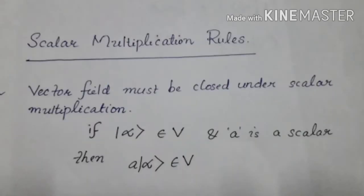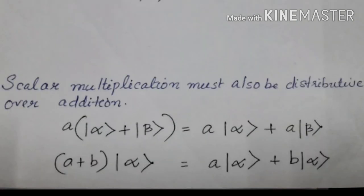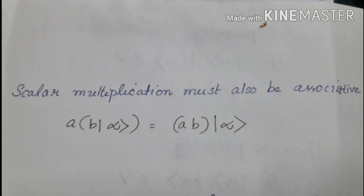Scalar multiplication rules: the vector field must be closed under scalar multiplication — that is, if ket vector alpha belongs to V and a is a scalar, then a times ket vector alpha belongs to V. Scalar multiplication must also be distributed over addition — that is, a times ket vector alpha plus ket vector beta equals a times ket vector alpha plus a times ket vector beta, and also a plus b times ket vector alpha equals a times ket vector alpha plus b times ket vector alpha.